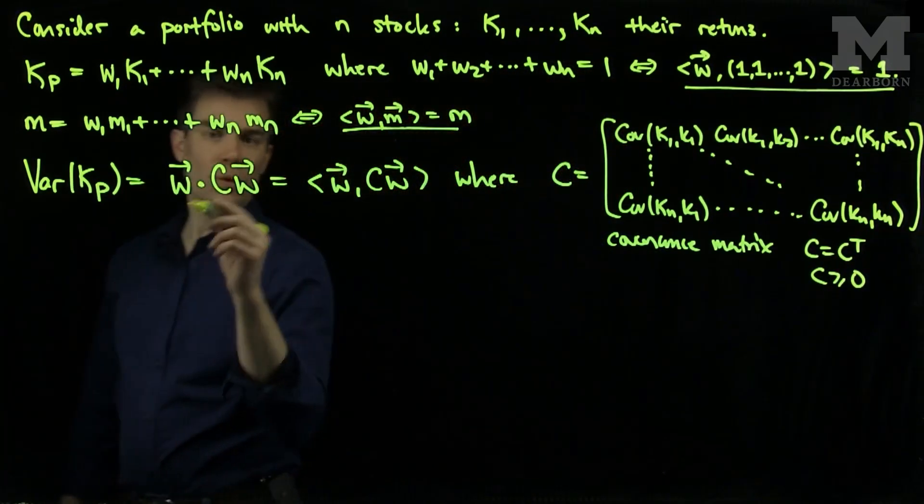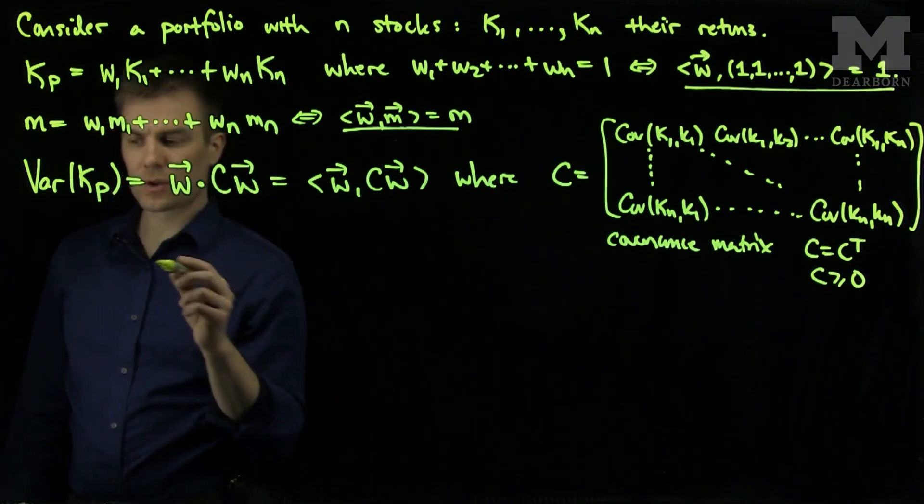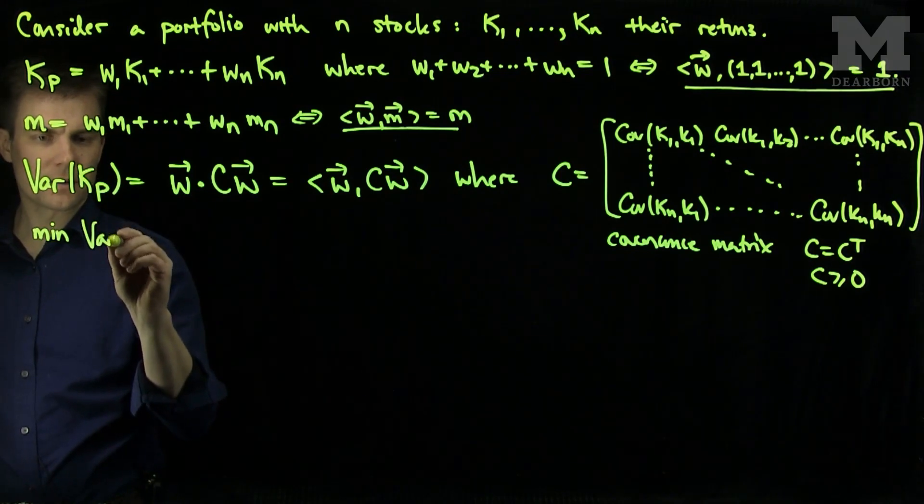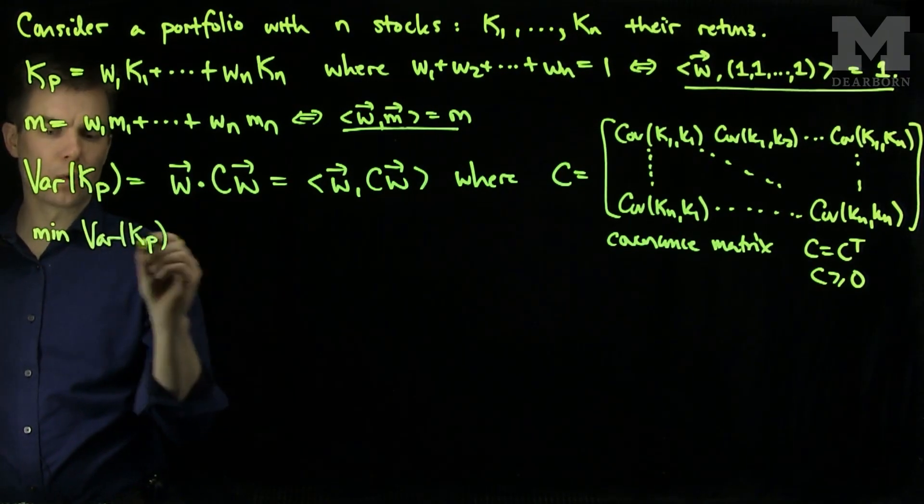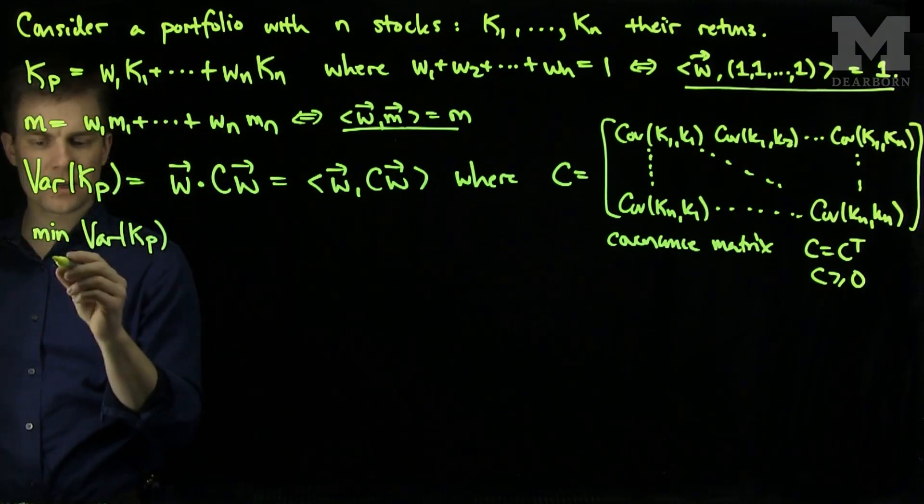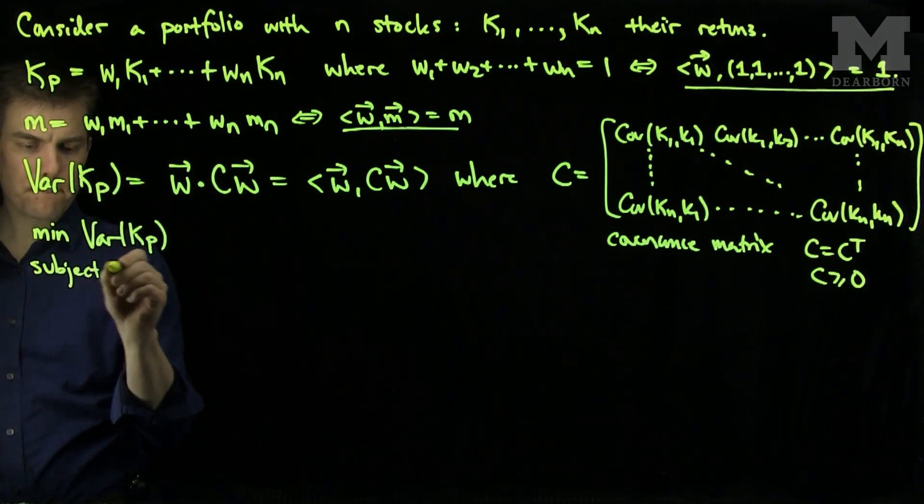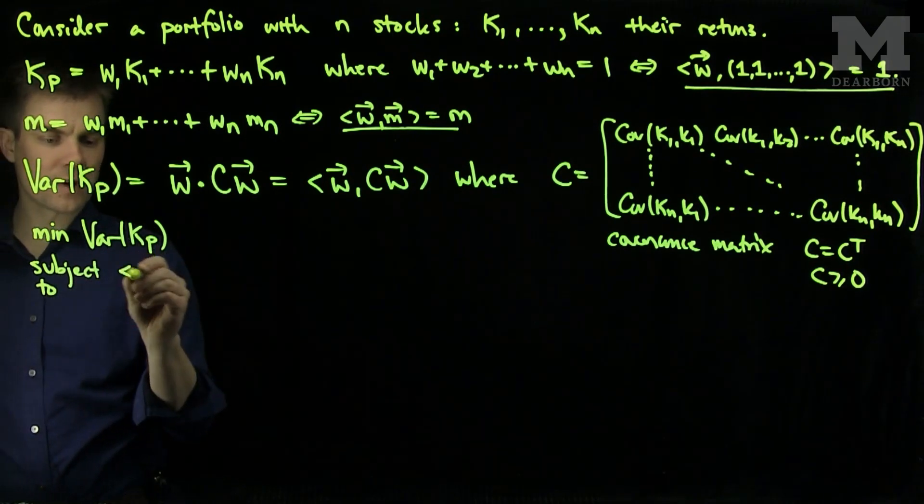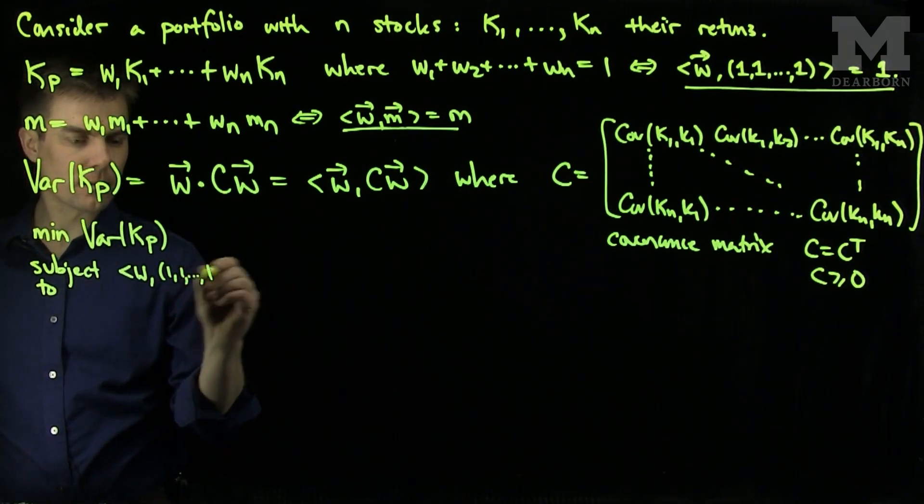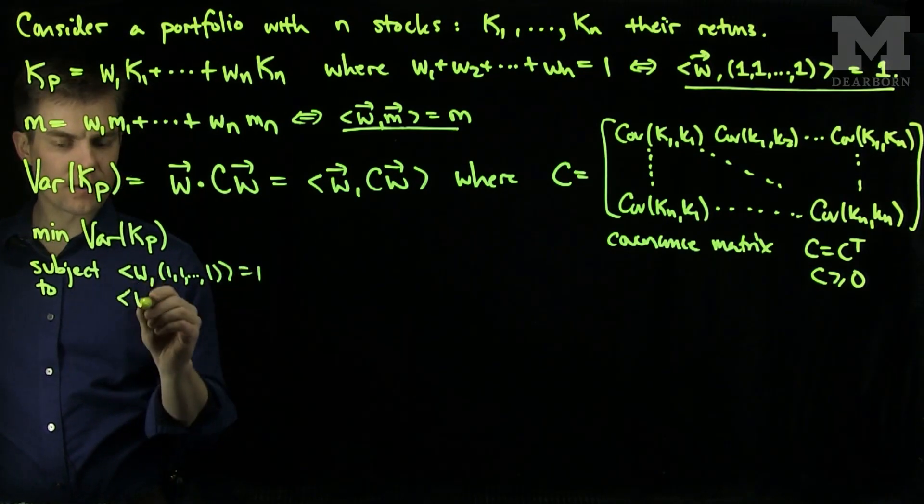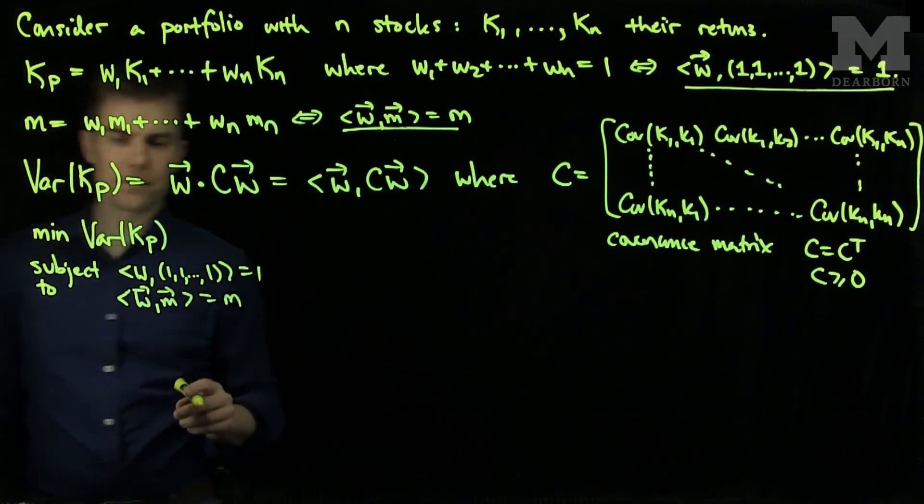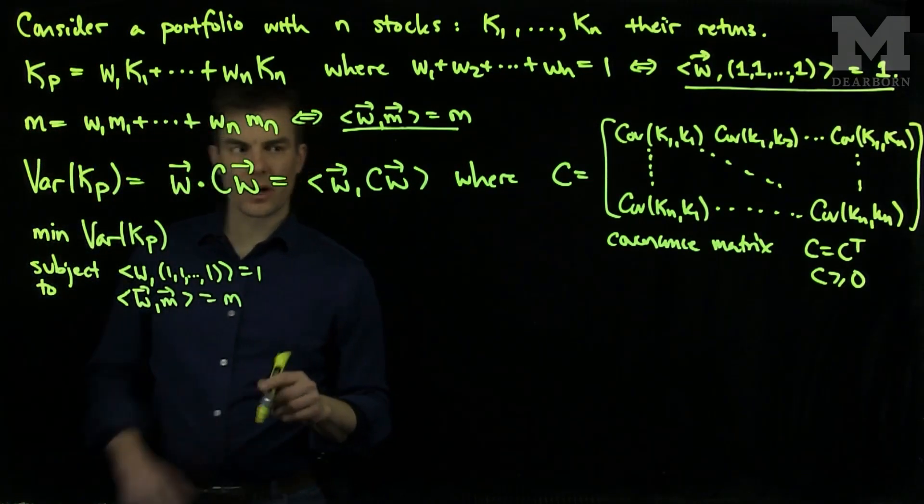Now, we ask the question, how do we minimize this problem subject to constraints? So I would like to minimize the variance of Kp, which will equivalently minimize the standard deviation of Kp, or the risk, subject to the constraints that w with the ones is 1 and wm is equal to m. So to do this, we set up the Lagrange multiplier method.